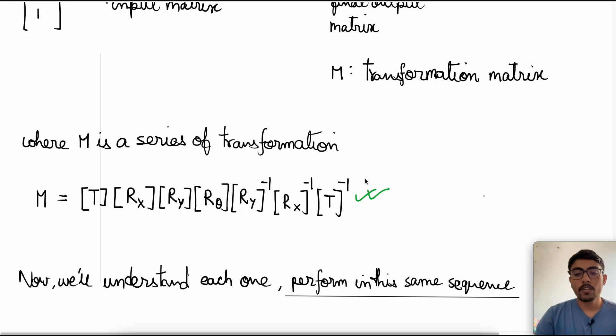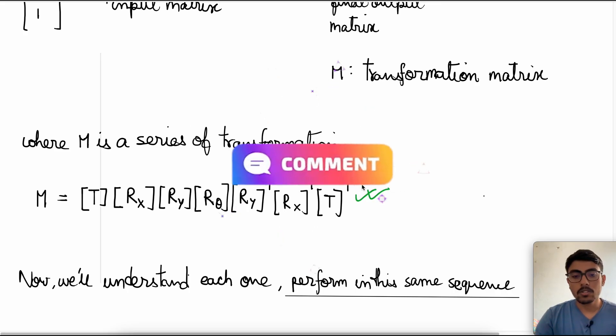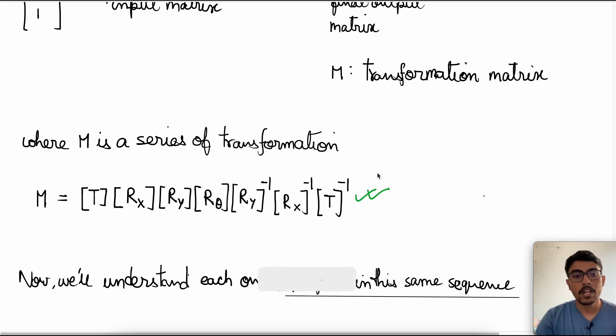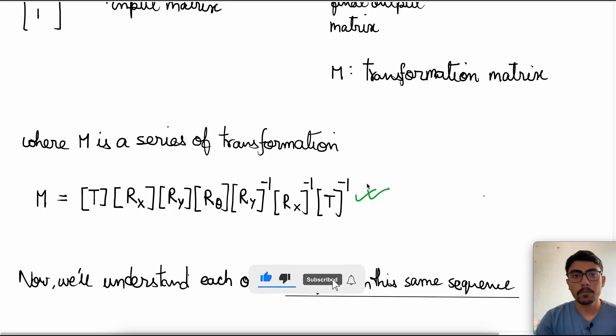That's how you perform a rotation about an arbitrary axis in 3D space. If you still have any doubts, feel free to reach out in the comment section below. If you liked this video, give it a thumbs up and subscribe for upcoming videos. Till then, happy solving.